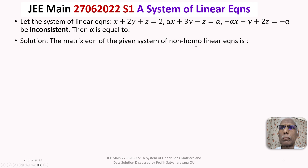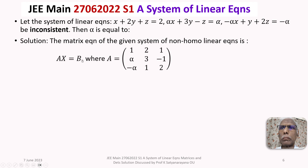We now discuss the solution in detail. Let us write down the matrix equation of the given system of non-homogeneous linear equations. These are non-homogeneous because the right-hand side is not equal to zero in every equation — even one equation suffices. So the matrix equation is Ax equals b, where A is called the coefficient matrix, formed by the coefficients of the unknowns.